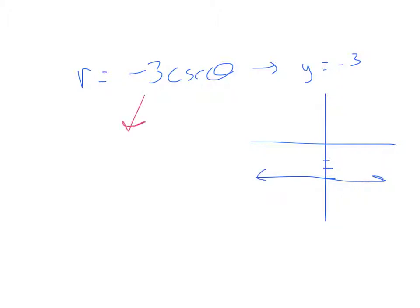If we took one quick example of this, if I asked you to graph r equals negative 3 cosecant theta, you're either going to have the fact memorized that that's y equals negative 3, and the graph therefore looks like this, or I'm going to expect that you can look at this and say, well, I know that's going to be negative 3 over sine theta.